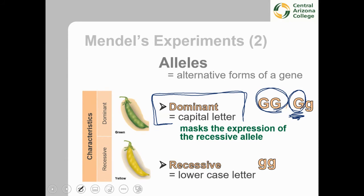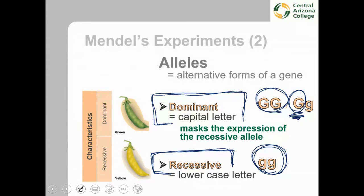Recessive alleles are less commonly expressed because to see a recessive trait in the offspring, you need to inherit the recessive allele from both parents. Both parents must give the recessive allele for the individual to show that characteristic — which is why we don't see recessive traits as commonly in nature. We mark recessive alleles in our shorthand with lowercase letters. It is there and can be passed onwards, but you need to inherit it from both parents to see it.